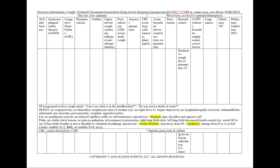In bronchiectasis, we can have a productive cough with a history of recurrent pneumonias or cystic fibrosis. We'll order immunoglobulin levels, a sweat chloride test, and a CT of the chest.